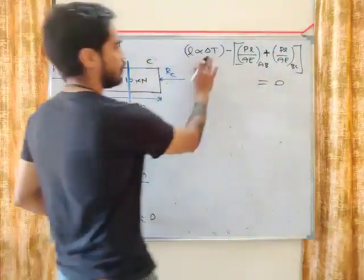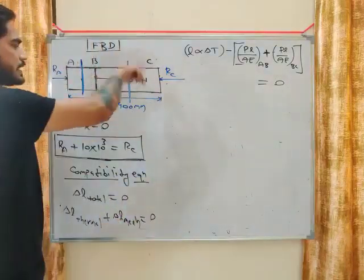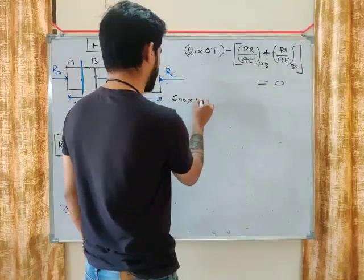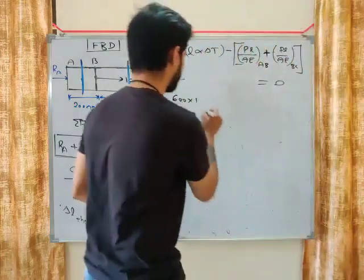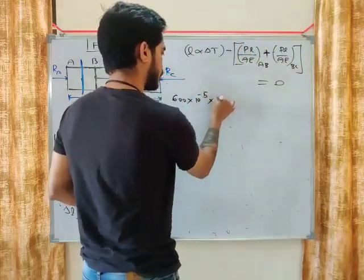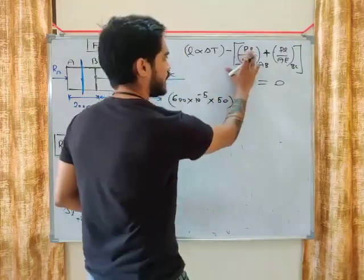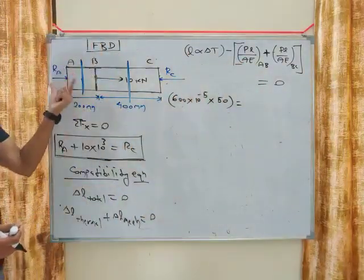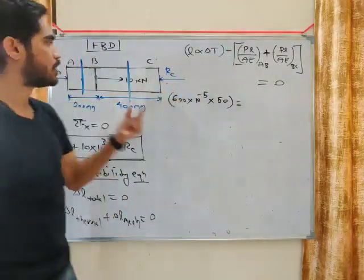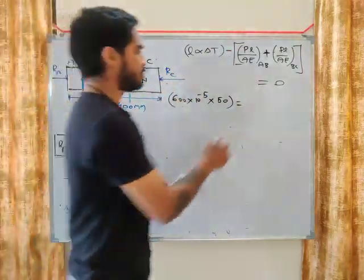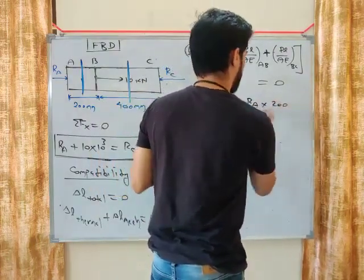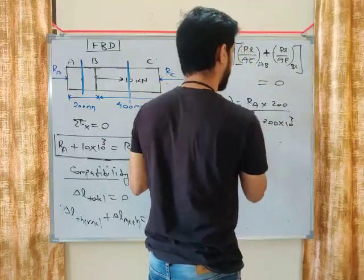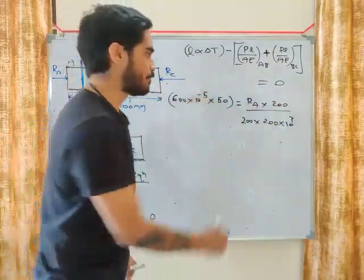Substituting values: 600 × 10⁻⁵ × 50 = RA × 200 / (200 × 200×10³) + (RA + 10×10³) × 400 / (200 × 200×10³). Area is 200 mm², E = 200×10³ N/mm², lengths are 200 and 400 mm. Solve for RA.